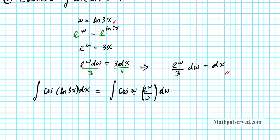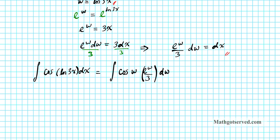You might be tempted to factor out the one-third here. You could do that, but since we're making multiple substitutions, it's good to refrain from that or else it makes the process more complicated when doing integration by parts. The smart strategy is to leave it in this form. We can now see that this is an integration by parts problem, and I'm going to evaluate it using my advanced tabular integration method.